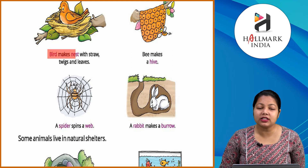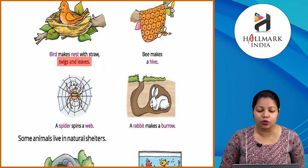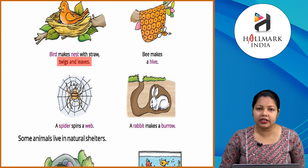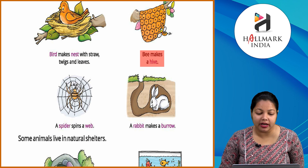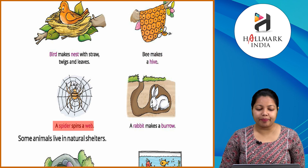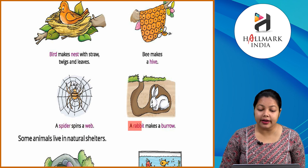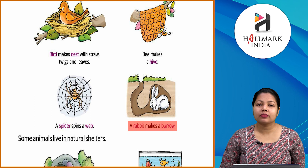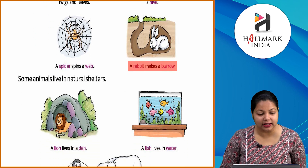Birds make nests with straw, twigs and leaves. Birds apne liye trees pe nest banati hain. Bees make a hive. Madhu makhi apne liye chatta banati hai. A spider spins a web — spider khud ke liye jala banata hai. Rabbit makes a burrow — rabbit khud ke liye khudta hai aur usme jake rehta hai.